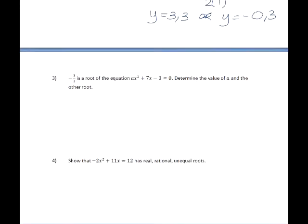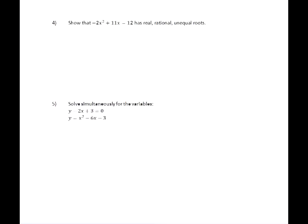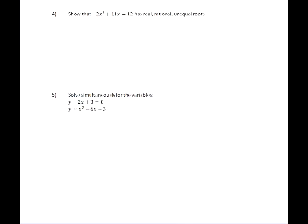Show that -2x² + 11x equals to 12 has real, rational, unequal roots. So whenever you are asked to show that something has a particular nature of roots, remember that you are not being asked to solve this equation. You are just going to need to say what the roots will be like. And to do that, we use our discriminant, our delta, but before we can use delta, our equation must be in standard form. So we need to subtract 12 from both sides.